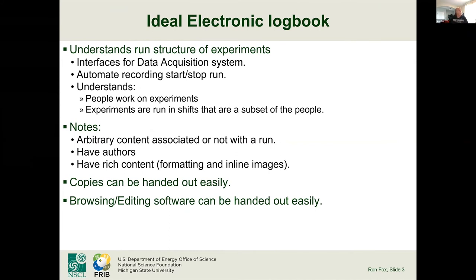So what does an ideal electronic logbook look like for nuclear science? You have to understand the run structure of experiments. Data taking is divided into runs; runs have start and stop times, and usually have titles and numbers. There ought to be an automatic entry in the logbook when a run starts and another when it stops. It should understand that people work on experiments and that during data taking, those people are organized into shifts. When a run starts and stops, the shift on duty should be documented so that if you have some question, you know who to talk to after the run.